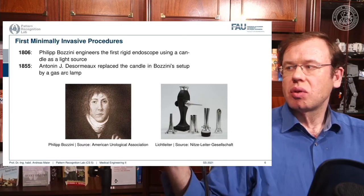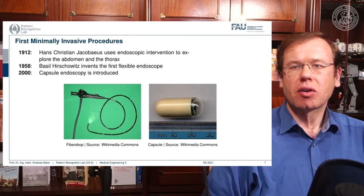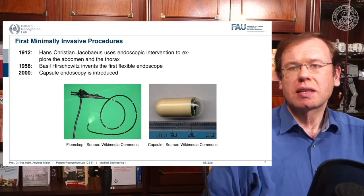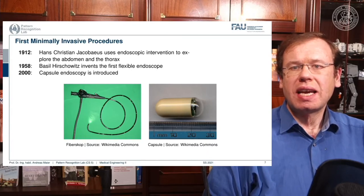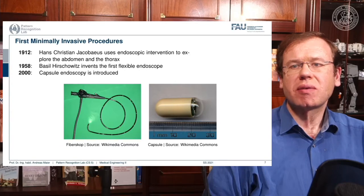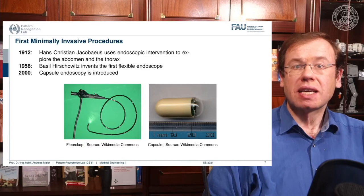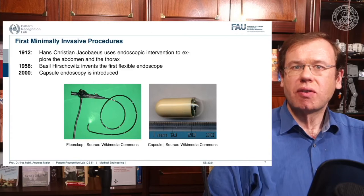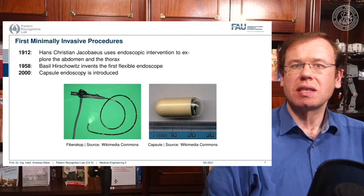This gave rise to more complex endoscopes. Already in 1912, Hans Christian Jakubeus used an endoscope to perform an intervention to explore the abdomen and the thorax. In 1958, Basil Hirschowitz invented the first flexible endoscope, shown here on the bottom left. This has flexible optics that can actually be bent using glass fibers, and with those fibers you're able to transport light into the body, image, and return the light so you can see it from the outside.